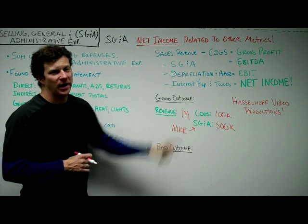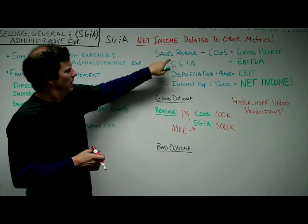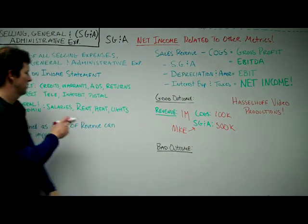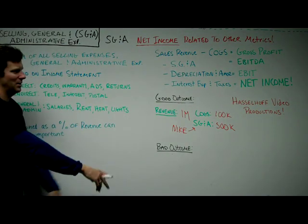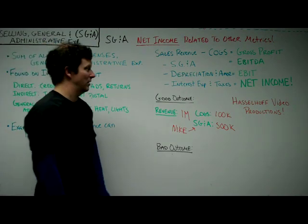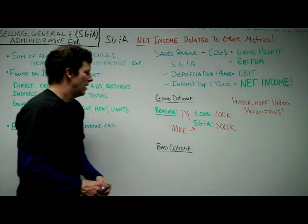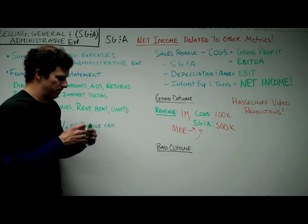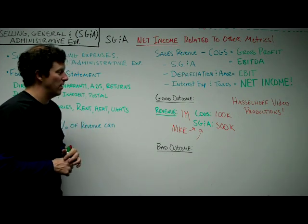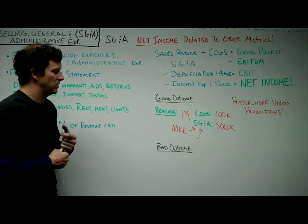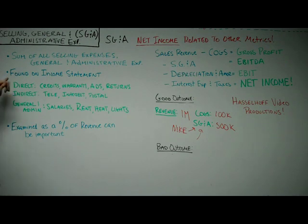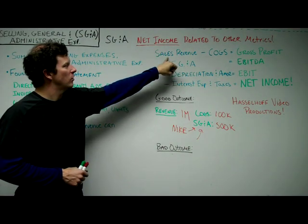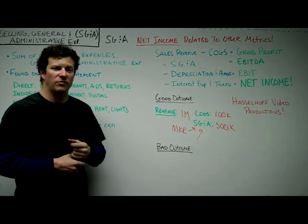SG&A is one of the key components in figuring out net income. It's about asking: how much money did we generate from sales, how much did it cost to build the product, and what did we pay for all the soft expenses — salaries, rent, heating, lights, the warehouse. A bad outcome is if you let SG&A get out of hand — if you pay people too much or have commission structures that are too high, you're left with no profit. The overall SG&A number is used in relation to revenue to figure out whether or not you're making a profit.